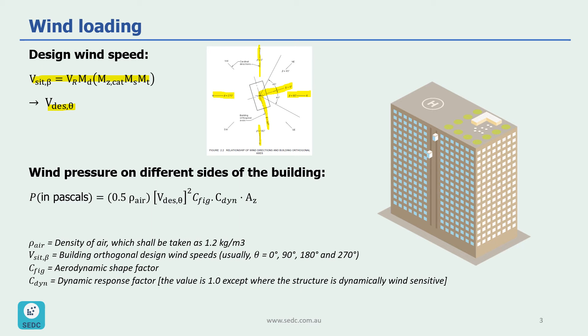A conservative approach is to design the structure using the wind speed and multipliers for the worst direction. For example, if we have a building located on a hill, then it may be easily checked that the V_site,β on the exposed face would be the worst case. To simplify the design, this value could then be used as design wind speed for all directions on this building.